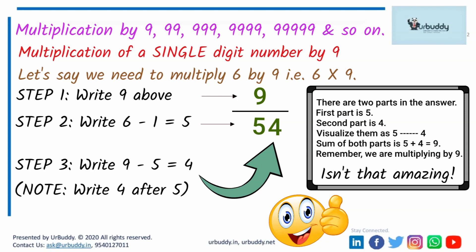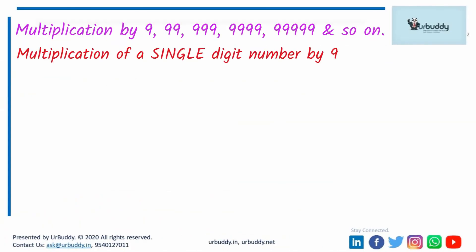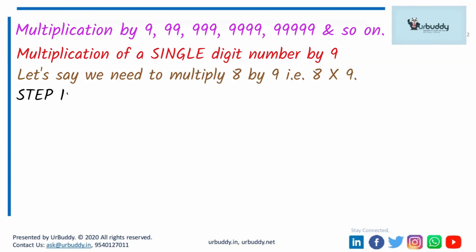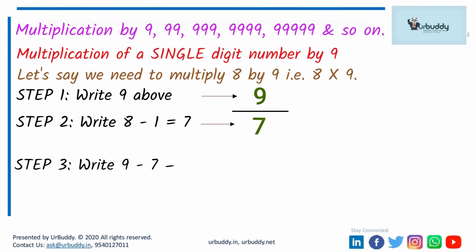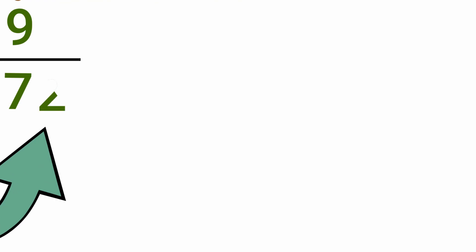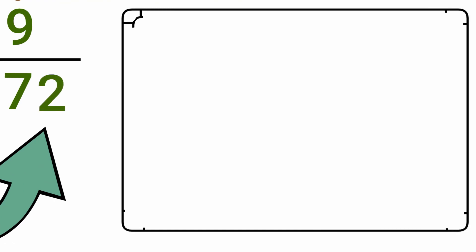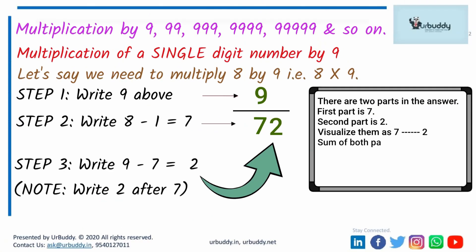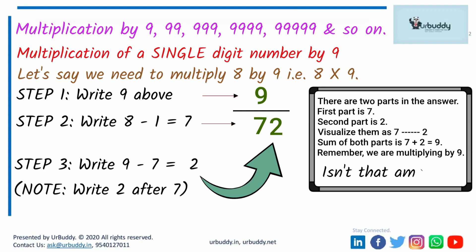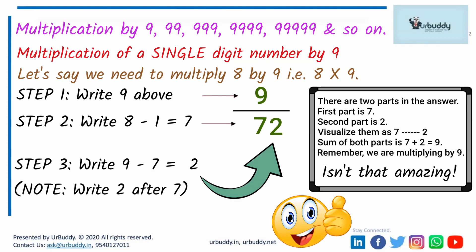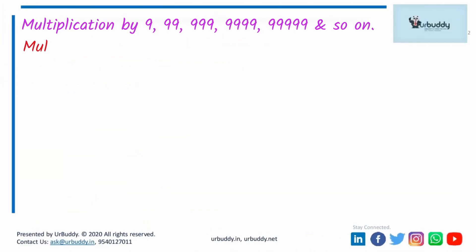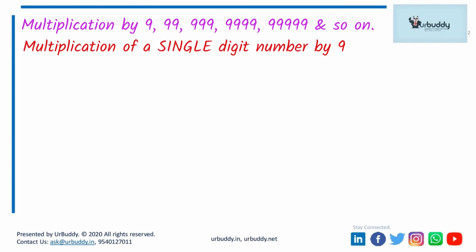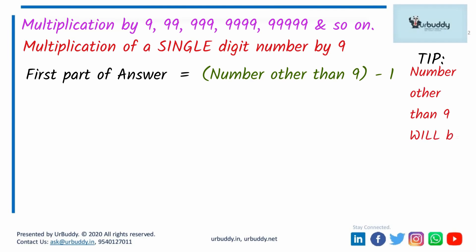Let's say we need to multiply 8 by 9. Step 1: write 9. Step 2: subtract 1 from 8 — 8 minus 1 equals 7; write 7 under 9. Step 3: subtract 7 from 9 — 9 minus 7 equals 2; write 2 after 7. The answer is 72. First part of answer is 7, second part is 2 — sum of both parts equals 9. So when multiplying with 9, to get the first part of the answer, subtract 1 from the other number.